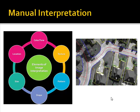Manual interpretation is historically the most common form of extracting information from imagery, and by far the most accurate — nothing beats a human when it comes to image interpretation. The elements of image interpretation are color and tone, texture, pattern, shape, size, and location. An experienced image analyst uses all of these elements when extracting information from remotely sensed data.